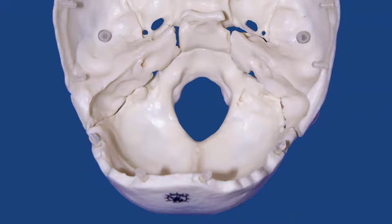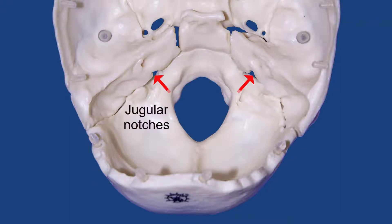Another thing you can see here is the part of the occipital bone which is going to contribute to the jugular foramen. There is a notch here which, together with a fossa found on the temporal bone, is going to form the jugular foramen.